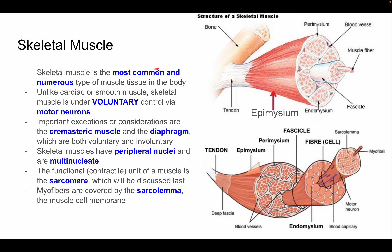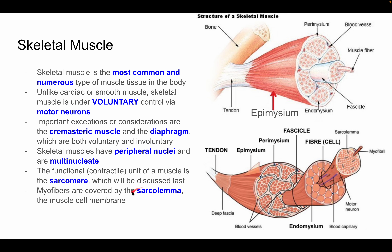Skeletal muscle is the most common and numerous type of muscle tissue and, in my opinion, the most complex. Unlike cardiac or smooth muscle, skeletal muscle is under voluntary control via motor neurons. Important exceptions include the cremasteric muscle and the diaphragm, which are both voluntary and involuntary. Skeletal muscles have peripheral nuclei and are multinucleate — many nuclei per myofiber. The functional contractile unit is the sarcomere, and myofibers are covered by the sarcolemma, the muscle cell membrane.